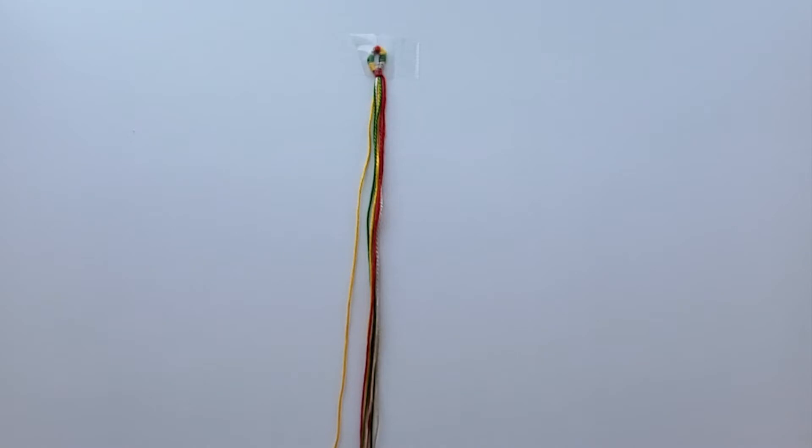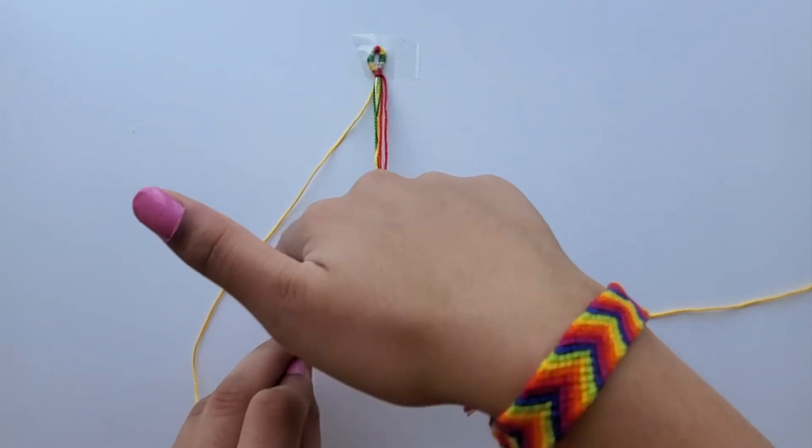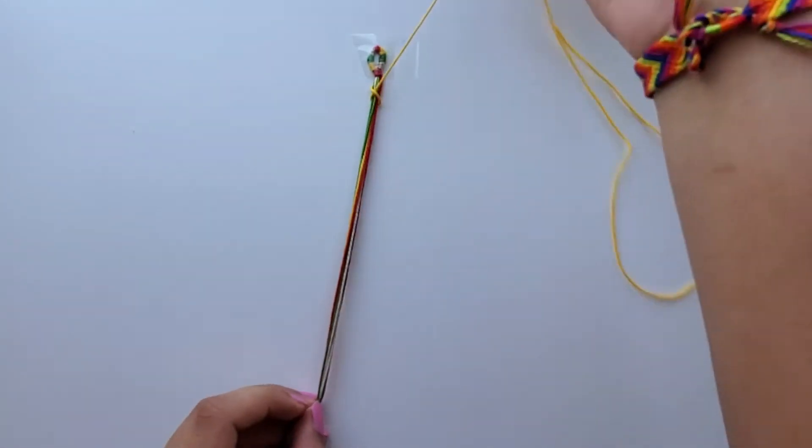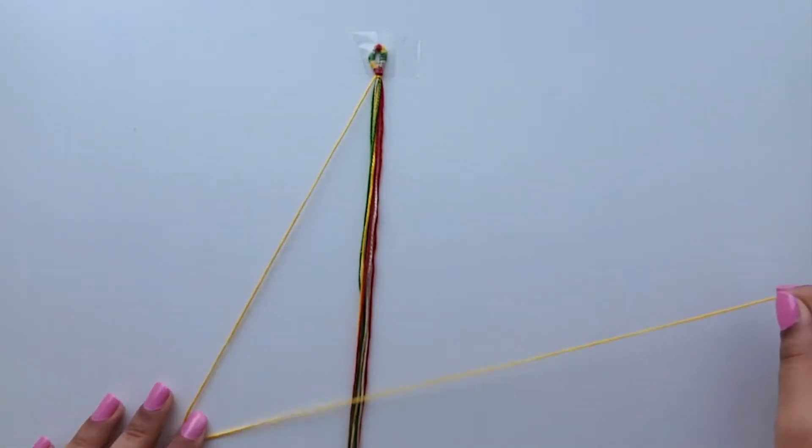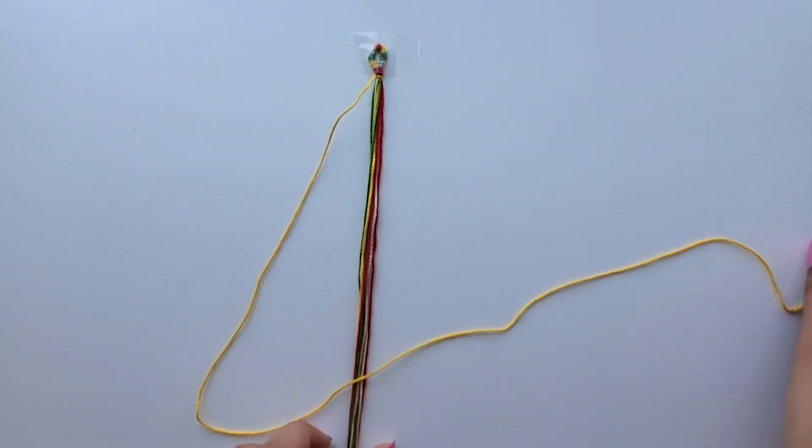Now to make the spiral part of the bracelet, make forward knots. Take your left string and fold it over the right. Then take the end of that string and pull it through the hole. Pull the string up to the top to make a forward knot. Once you have made many forward knots, you will automatically see the spiral start to form.